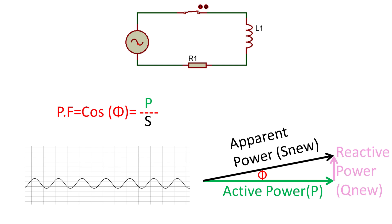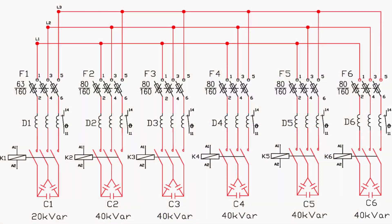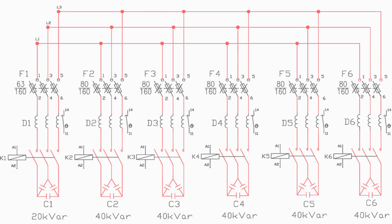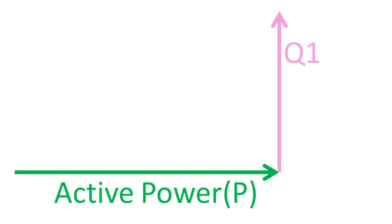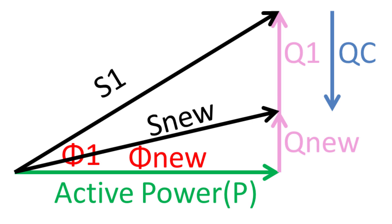An APFC panel's job is to correct the power factor by switching capacitors on and off as needed. Capacitors add reactive power back into the system, improving the power factor and reducing wasted energy. These panels are a must in any system where inductive loads are common, like motors and transformers. They work by balancing out the reactive power to keep your power factor near one, because adding a capacitor creates a leading power factor.